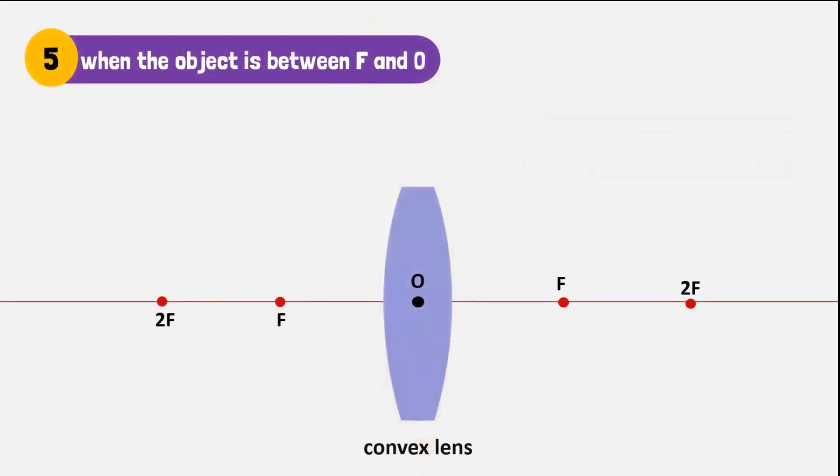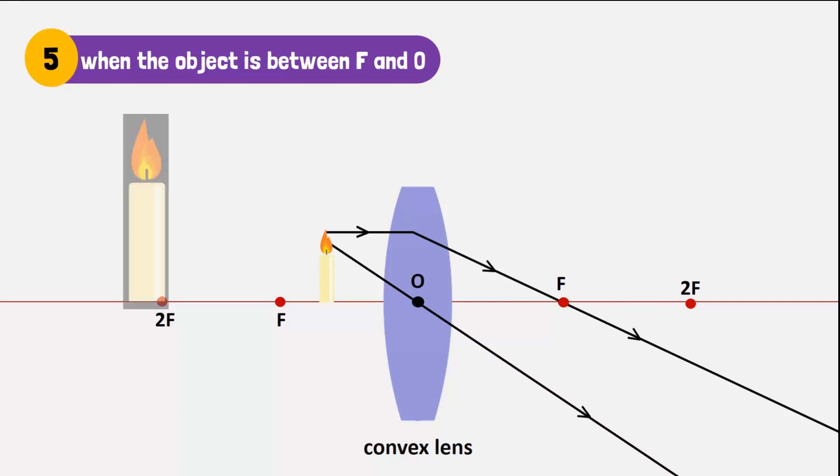Placing the candle any closer will result in the rays diverging as they refract through the lens. It will form a large image that is virtual and behind the lens.